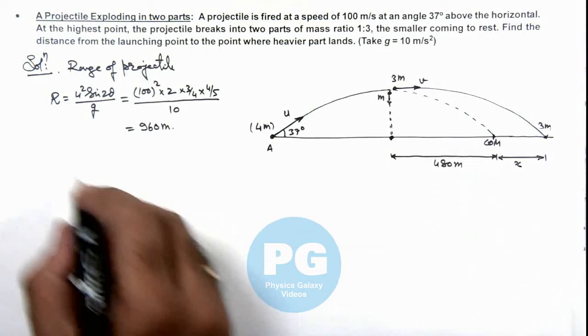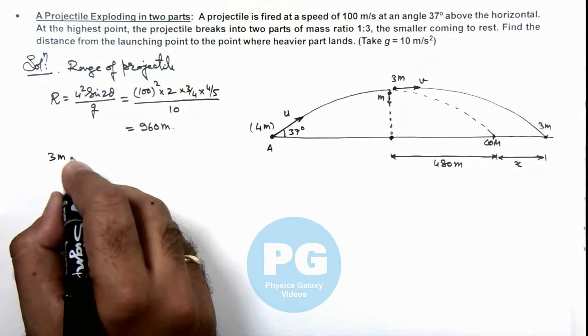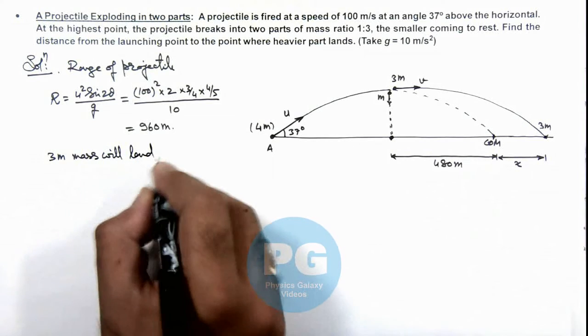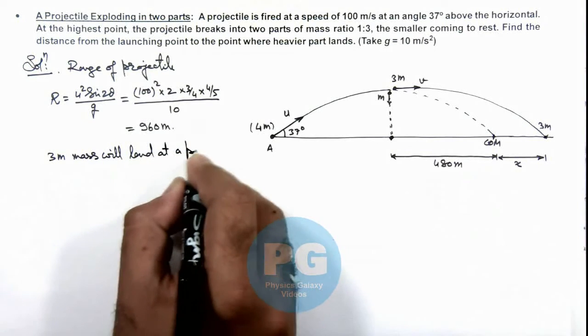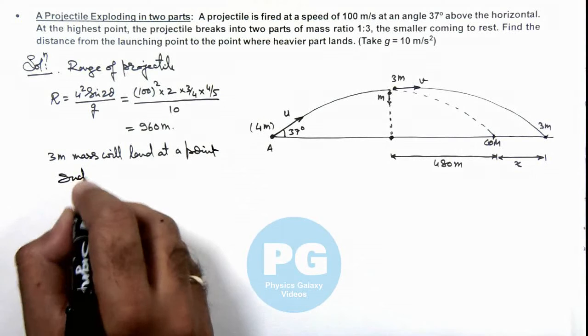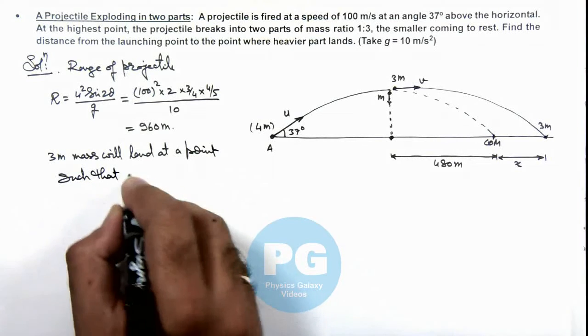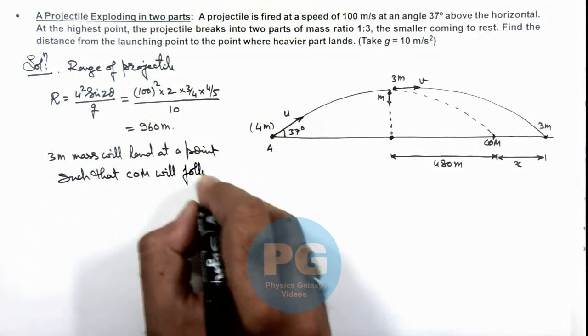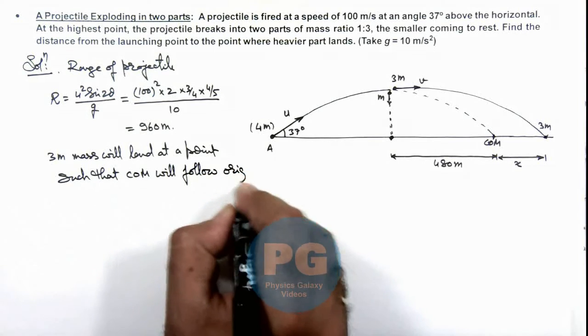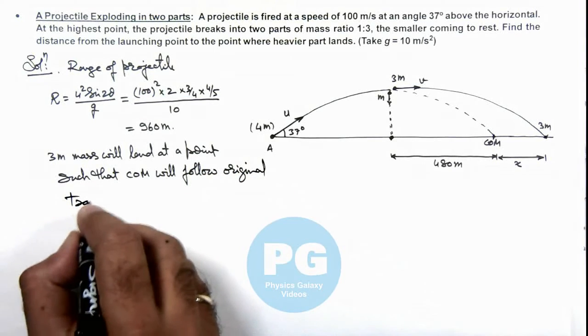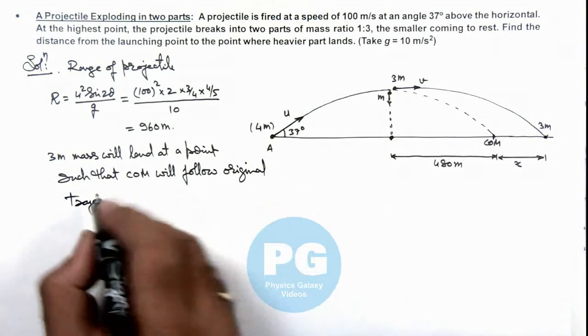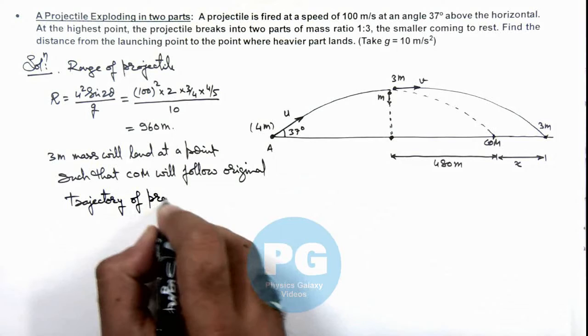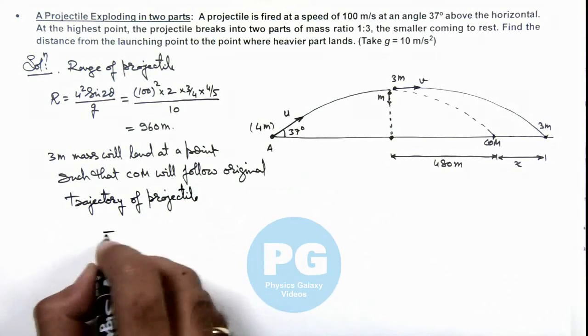So we can write 3m mass will land at a point such that center of mass will follow original trajectory of projectile.